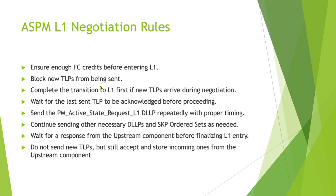For the L1 negotiation rules, the endpoint needs to do the following: ensure enough flow control credits before entering L1, because during the handshake mechanism the root port may send packets that need to be stored and completion sent after exiting L1. It also needs to block new TLPs from being scheduled and complete the transition to L1.